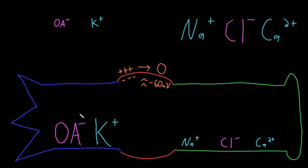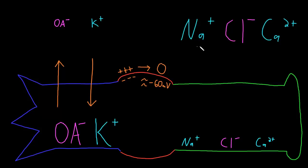Each of these ions is acted on by two forces that try to drive them into or out of the neuron. The first is an electrical force from the membrane potential — each ion is attracted to the side of the membrane with the opposite charge. The organic anions are negatively charged, so they're attracted to the positive outside; their electrical force tries to drive them out. Potassium is positively charged, so it's attracted to the more negative inside; its electrical force tries to drive it in. Sodium is the same as potassium — its electrical force tries to drive it into the neuron. Chloride, like the organic anions, has an electrical force trying to drive it out. Calcium, like potassium and sodium, has an electrical force trying to drive it into the neuron.